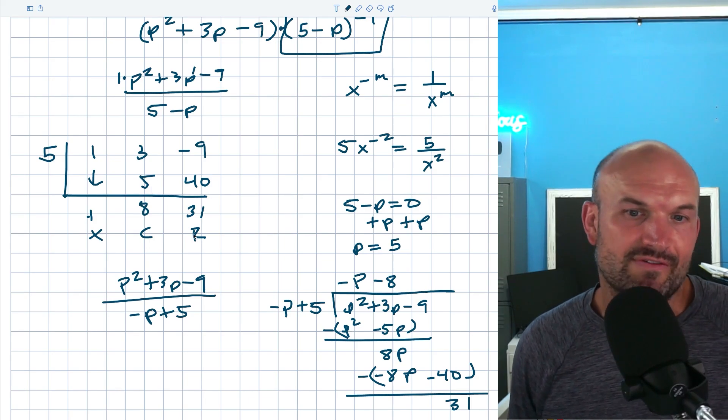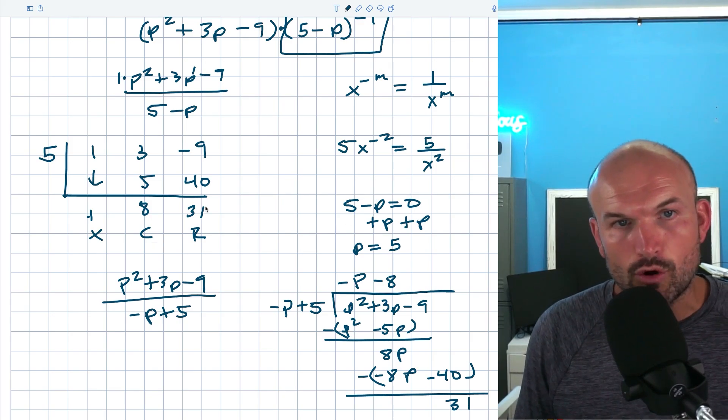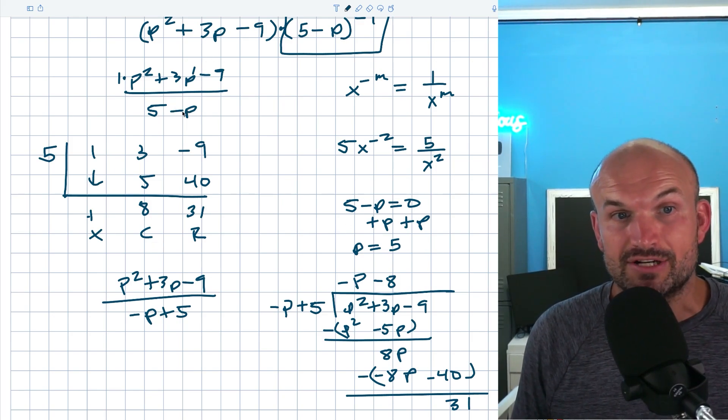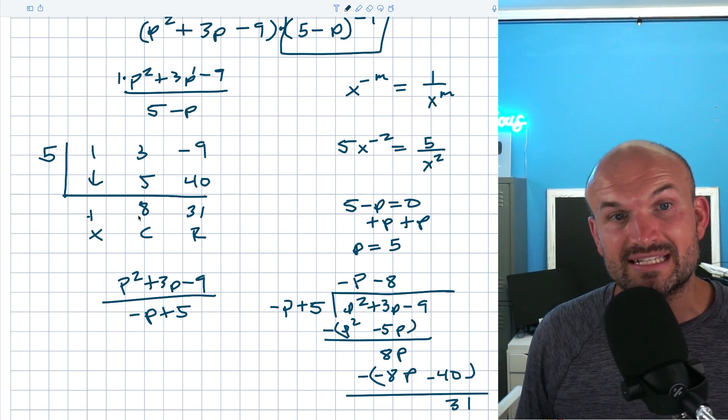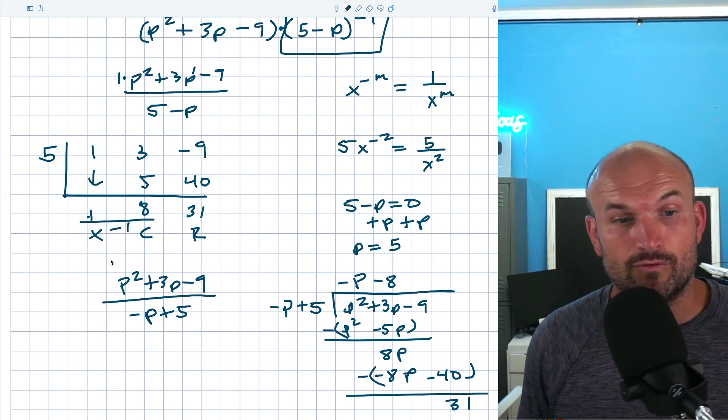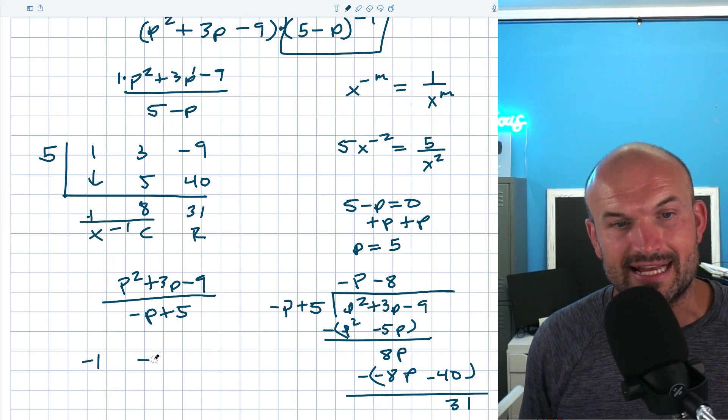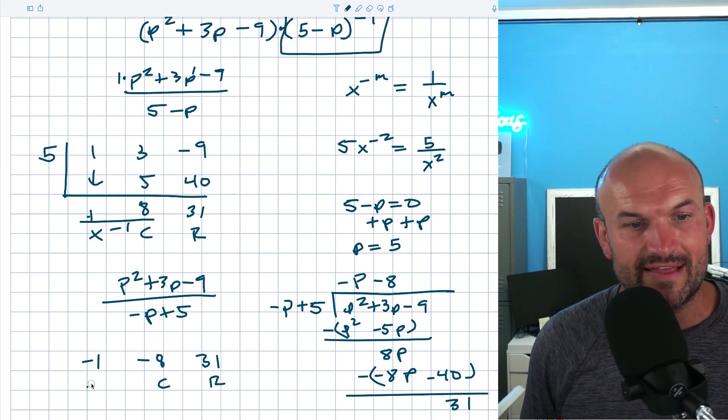So basically, we've got the exact same answers, but these are negative and this one is positive. So how do we transform our synthetic division to the correct answer with long division? All we simply need to do is whatever our coefficient is for our term in our divisor, right? If it's negative 1, if it's 2, if it's 5, then all you need to do is divide your quotient from synthetic division by that value. So all I simply need to do in this case is just divide everything by negative 1, which is going to give me a negative 1 and a negative 8. So I'll still have a positive 31.